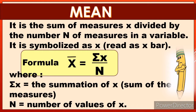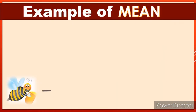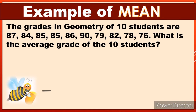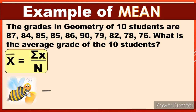Those are the definitions of mean. Now we have an example of how to find the mean. The grades in geometry of 10 students are 87, 84, 85, 85, 86, 90, 79, 82, 78, and 76. What is the average grade of the 10 students?